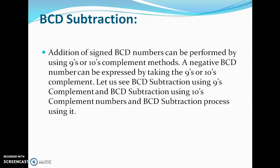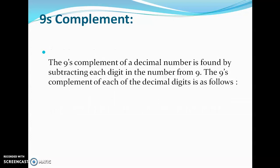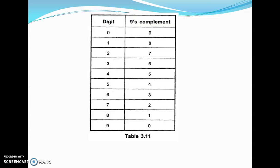Let us see BCD subtraction using 9's complement and BCD subtraction using 10's complement. The 9's complement of a decimal number is formed by subtracting each digit in the number from 9. Here we have a table with all the decimal digits and their corresponding 9's complement. For example, the 9's complement of 0 is 9 minus 0, which is 9. The 9's complement of 1 is 9 minus 1, which is 8. The 9's complement of 2 is 9 minus 2, which is 7, and the same goes for the rest of the decimal digits.